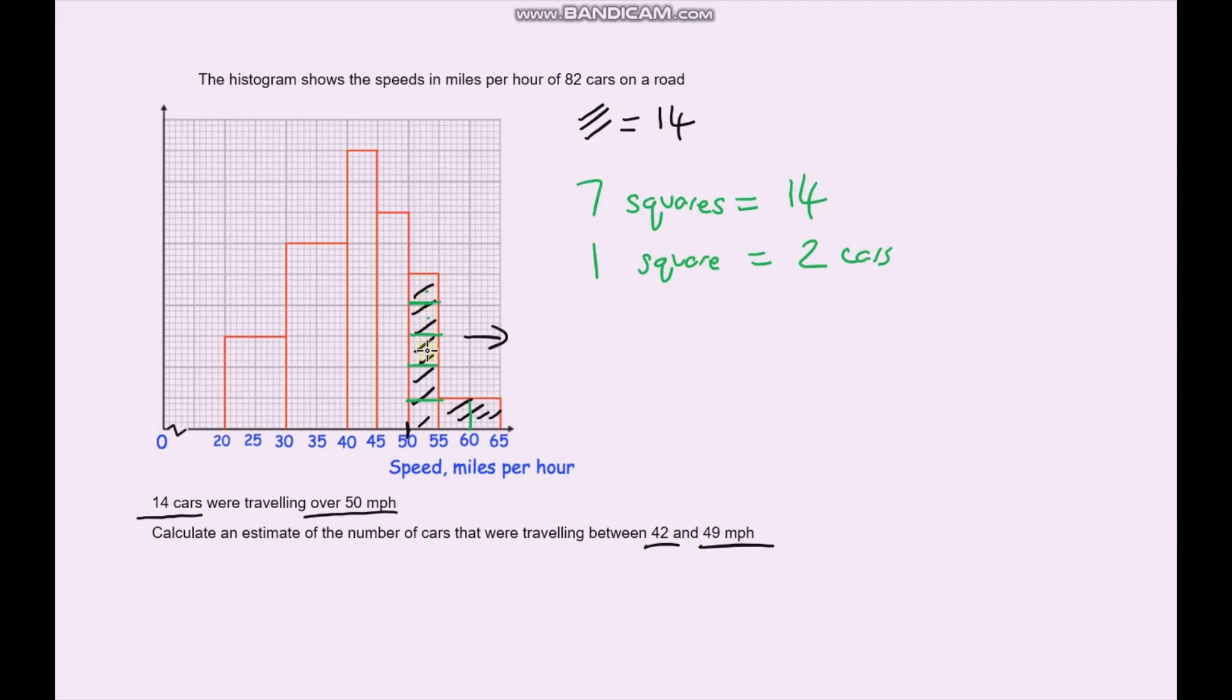For every 1 square is 2 cars. So we've got 1, 2, 3, 4, 5 squares in this category. So 5 times 2 is 10. There's 10 cars traveling between 50 and 55 miles per hour. We've got 2 squares here, 2 times 2 gives us 4. If we look at this category here, we've got 1, 2, 3, 4, 5, 6, 7 squares. 7 times 2 is 14. And then this one here, we've got 1, 2, 3, 4, 5, 6, 7, 8, 9 squares. 9 times 2 is 18.